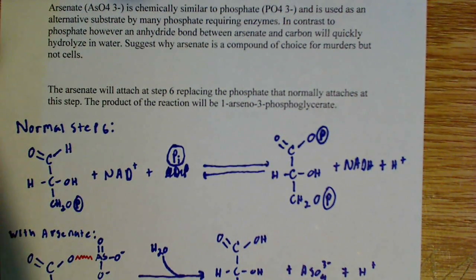The arsenate will attach at step six, replacing the phosphate that normally attaches at this step. The product of the reaction will be 1-arseno-3-phosphoglycerate.